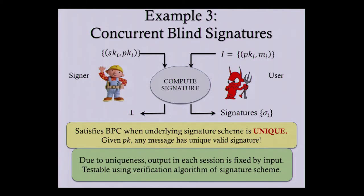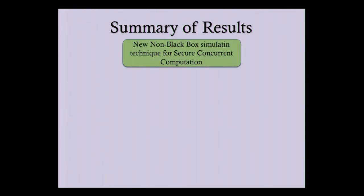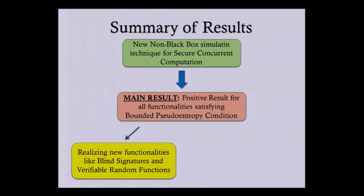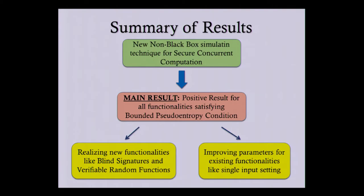This shows why concurrent blind signatures satisfies bounded pseudo-entropy: any functionality in the ideal world which does not add too much pseudo-entropy into the outputs should be realizable. In summary, we give a new non-black-box technique for concurrent secure computation which yields positive results for all functionalities satisfying bounded pseudo-entropy, with applications including realizing new functionalities — blind signatures, verifiable random functions, and more — and improving parameters for existing functionalities such as round complexity in the single input setting.